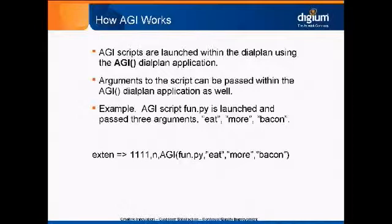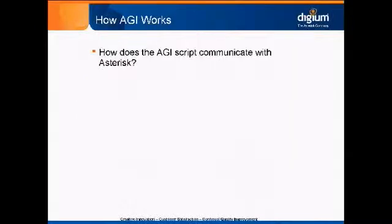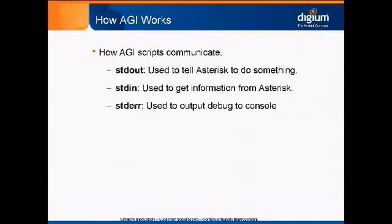Arguments to an AGI script can be passed within that dial plan application. In the example below, we have a Python script called fun.py, which is our AGI script. It's launched and passed three command-line arguments — in this case, 'eat more bacon.' Every subsequent argument after the extension is passed into the script. AGI scripts communicate with Asterisk via standard in and standard out: standard out tells Asterisk to do something, and standard in gets information back.